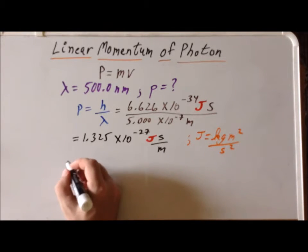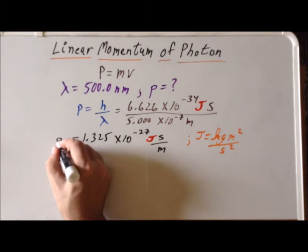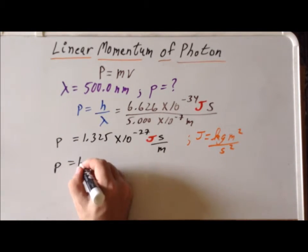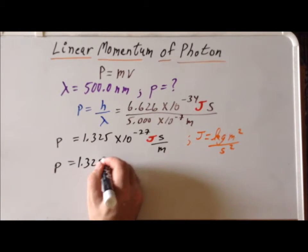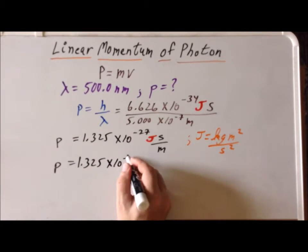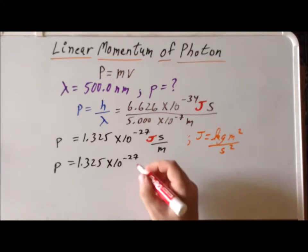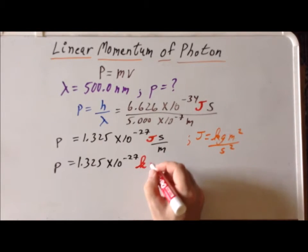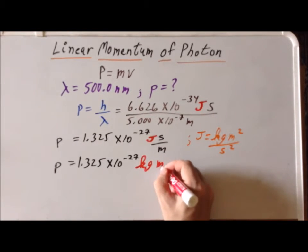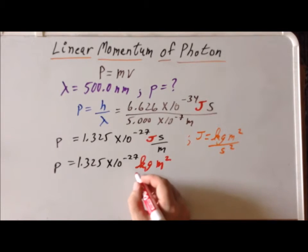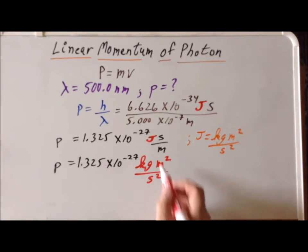So, we have our momentum here. Again, it's 1.325 times 10 to the minus 27. And I'll put in for the joules. So, we have kilogram meter squared per second squared. And I've color-coded the definition of a joule in red there. And then the rest of the units are seconds divided by meters.